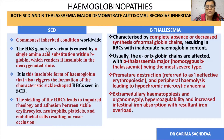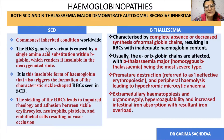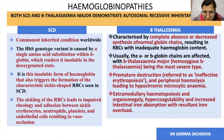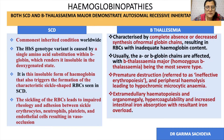Because of anemia, there is extramedullary hematopoiesis in organs like the liver and spleen, leading to organomegaly. There is also hypercoagulability and increased iron absorption with resulting iron overload.